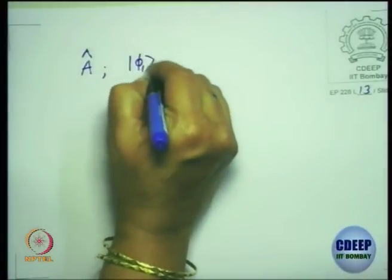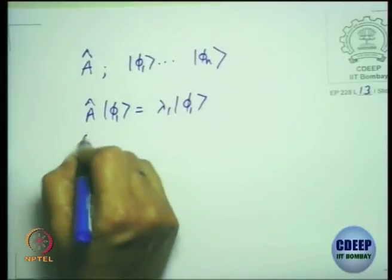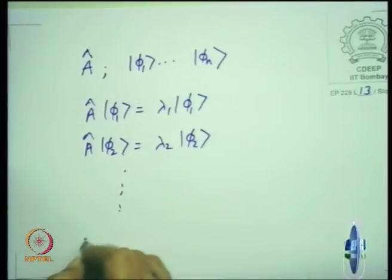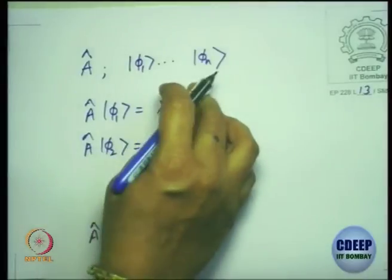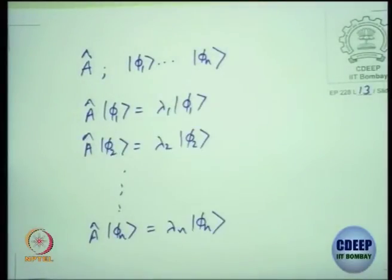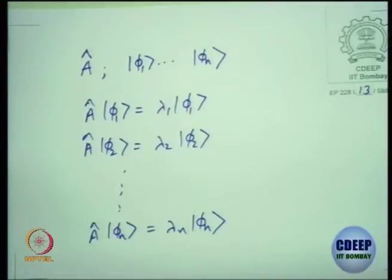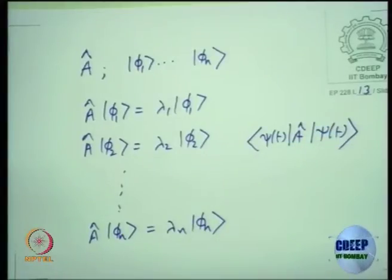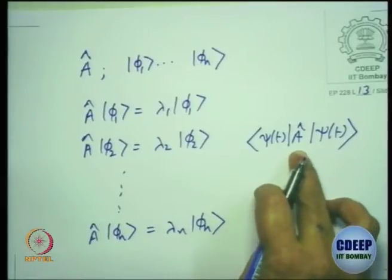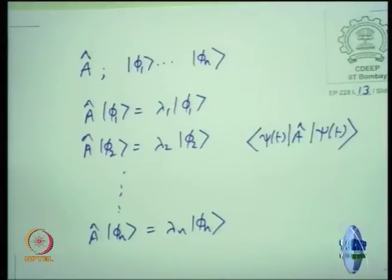Whenever you are given an operator A, you can find a complete set of bases |φ₁⟩ through |φ_n⟩ such that A|φ₁⟩ = λ₁|φ₁⟩, A|φ₂⟩ = λ₂|φ₂⟩, and so on. This basis is called the eigenbasis of the A operator with eigenvalues λ_n. Typically, to find the expectation value of A in the state |ψ(t)⟩, you insert the complete set of states — the identity operator in the eigenbasis of A — so you can proceed with the calculation.